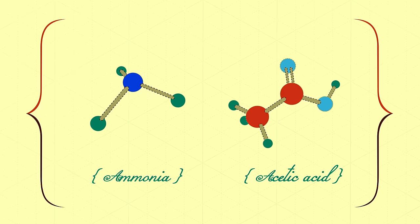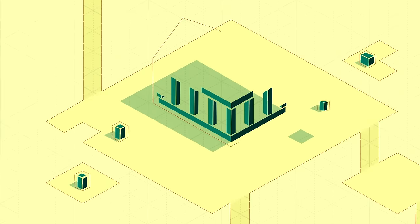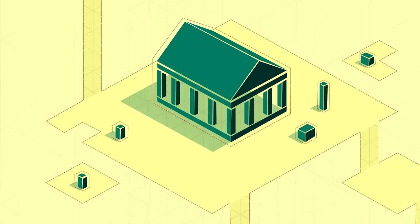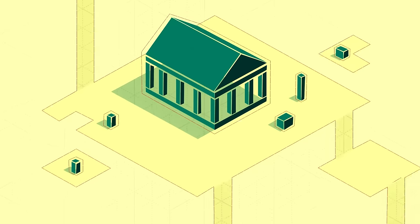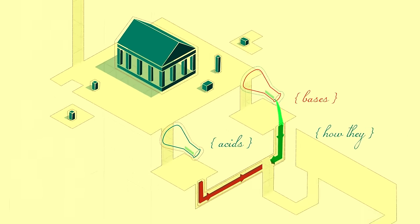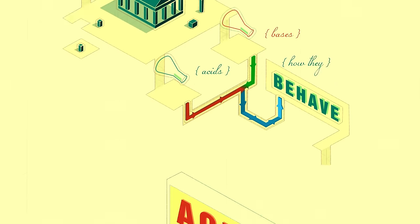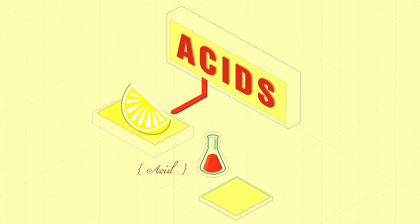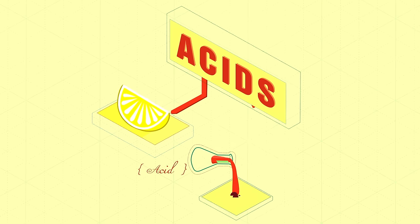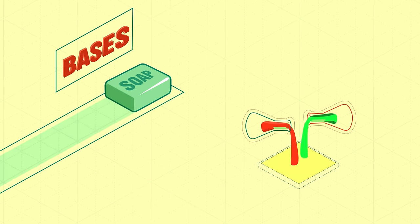You were probably never taught that a long time ago — like ancient Greek ago — before anyone knew about atoms or molecules, acids and bases were defined by how they behaved. Acids tasted sour and corroded metals. Bases felt slippery and could somehow counteract acids.